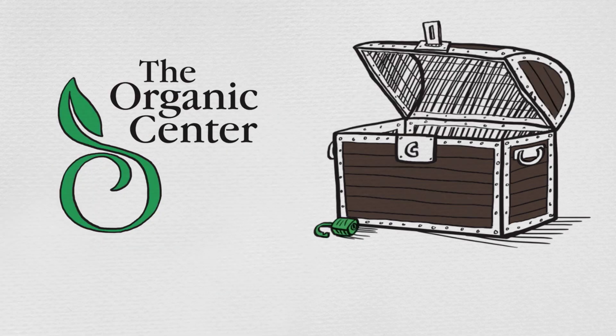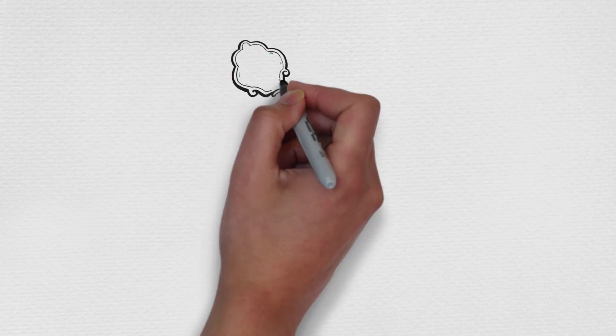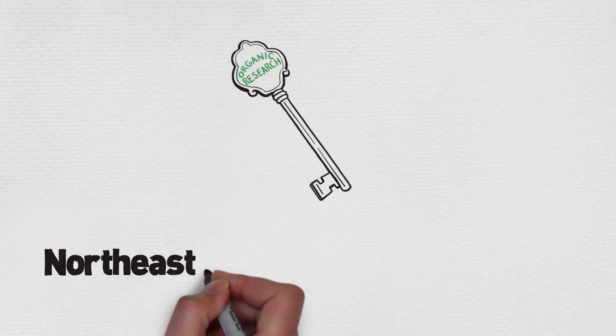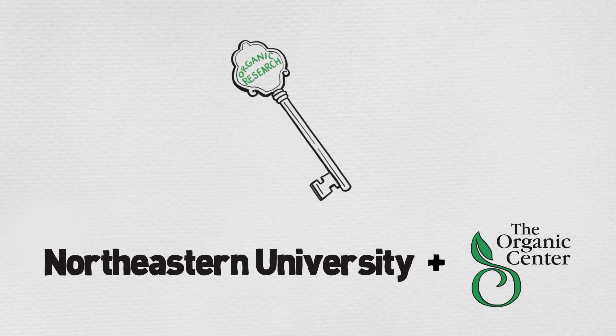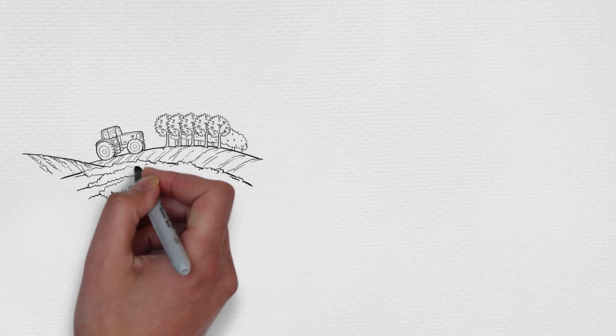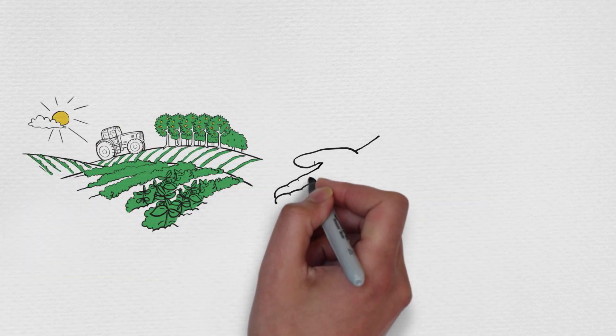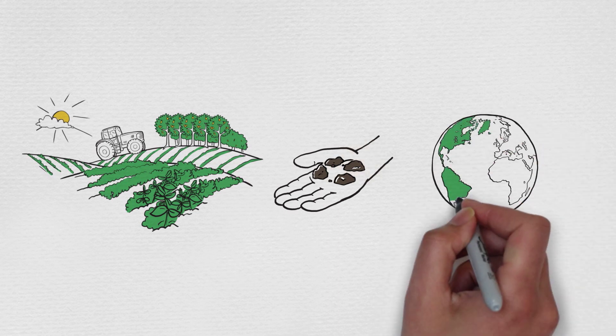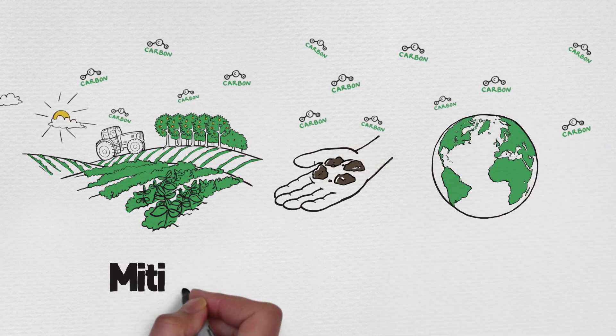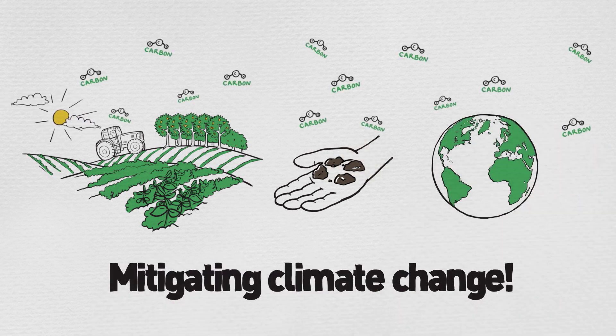The Organic Center has unlocked the secrets of organic soil and its groundbreaking stuff. A revolutionary study, in collaboration with Northeastern University, goes a step further than previous research and proves that organic farming practices not only improve soil health, but are also key for mitigating climate change.